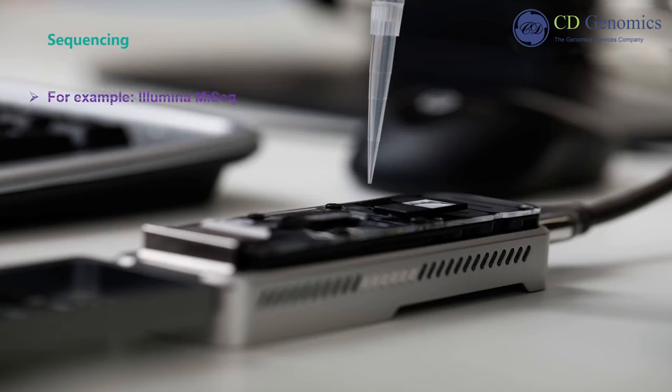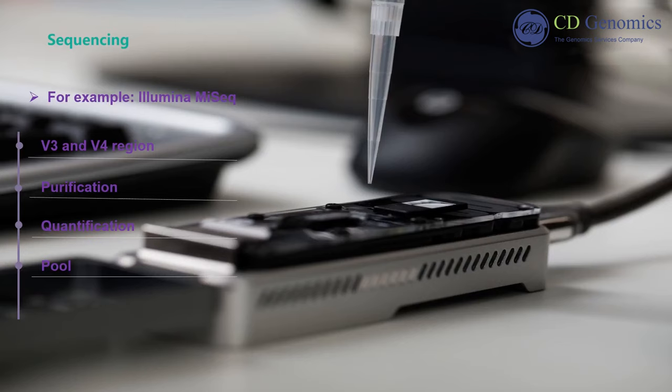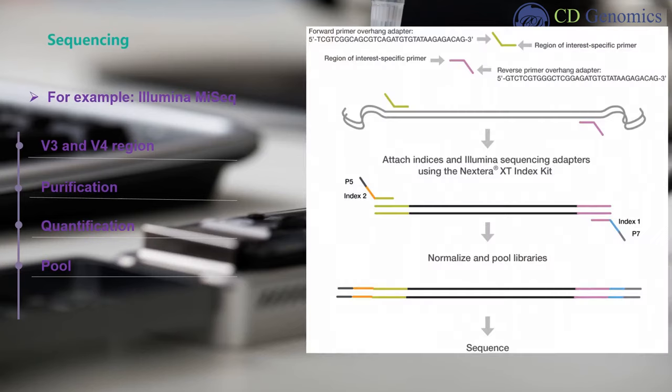When sequencing is performed with Illumina MiSeq, V3 and V4 region is commonly amplified by using a limited-cycle PCR. The PCR products are purified, quantified, and pooled. Subsequently, add Illumina sequencing adapters and dual-index barcodes to the amplicon target. By using the full complement of Nextera XT indices, up to 96 libraries can be pooled together for sequencing.